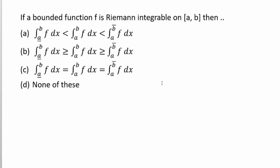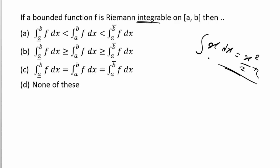The next question: if a bounded function f is Riemann integrable on the closed interval [a, b], then the lower integral equals the upper integral equals the actual integral of the function. This equality condition is the definition of the Riemann integral of a function. Option C is again the correct answer.